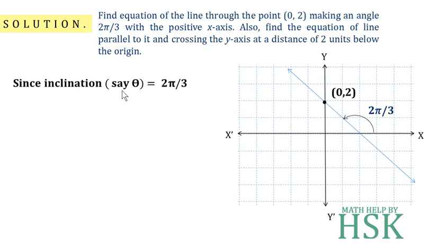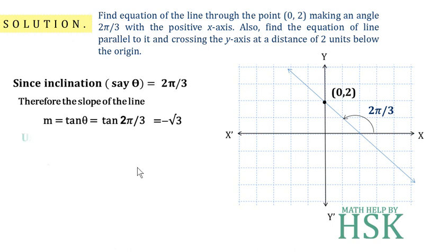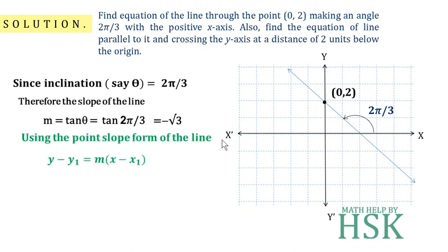Since the inclination θ of the line is 2π/3, the slope of the line is given by m = tan(θ) = tan(2π/3) = tan(120°) = −√3. Therefore, the slope of the line is −√3.